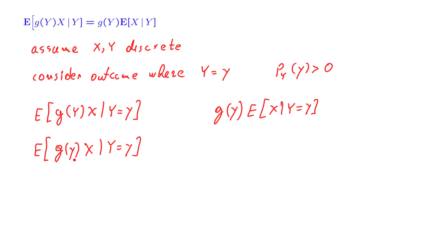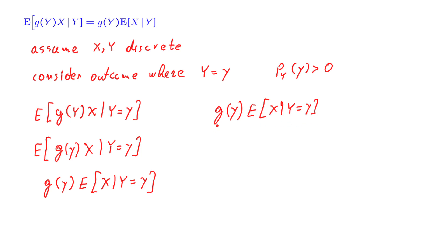But now, since this is a number, it can be pulled outside the expectation. So we have concluded that for any outcome for which capital Y takes this specific value little y, this random variable takes this value and that random variable takes this value — they are the same. So no matter what the outcome is, these two random variables take the same value, and therefore they are the same random variables.